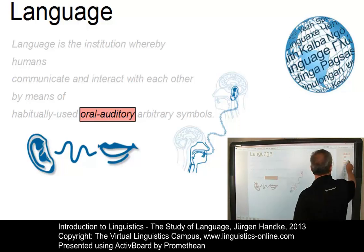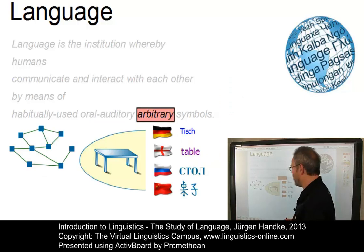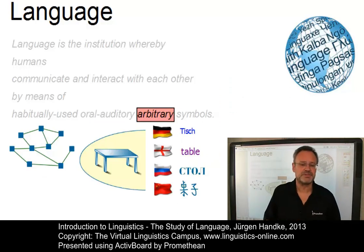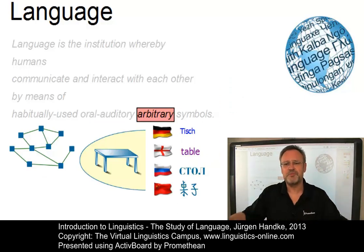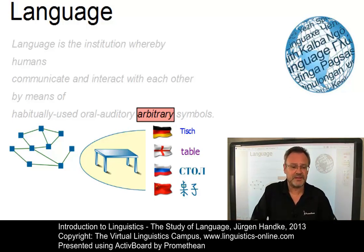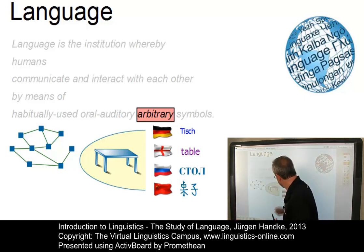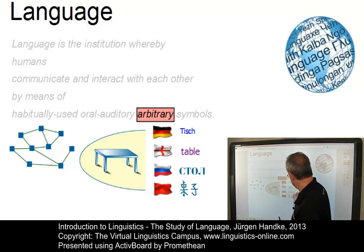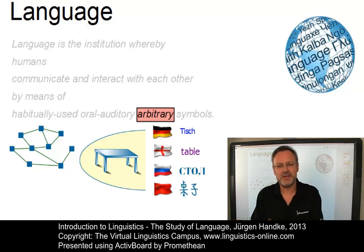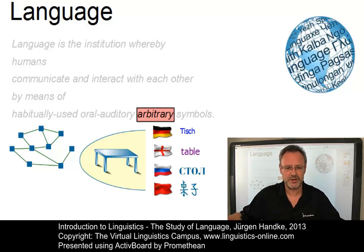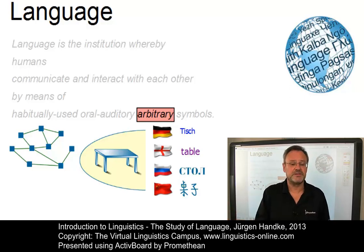And finally, language makes use of arbitrary symbols. There is no obvious relationship between the linguistic sign — that is, the word or its sound shape — and the object in the real world. Here we have the object 'table,' but look at these realizations in four different languages. There is no direct relationship between the linguistic sign and the object, so the sign has to be learned.